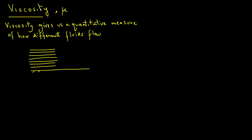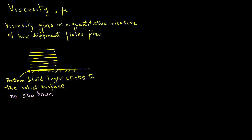We are going to assume that the very bottom layer, as shown in this figure, sticks to the wall. In other words, it doesn't move. We call this a no-slip boundary condition, and all fluids actually satisfy this condition.